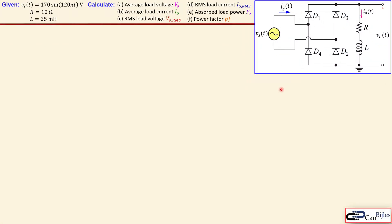We have the bridge configuration of our full wave rectifier. This is the AC source signal, and here you see the series combination of R and L. The values of the source, the resistor and inductor are shown here. We want to calculate the average load voltage, average load current, RMS load voltage, RMS load current, and also the absorbed power and the power factor.